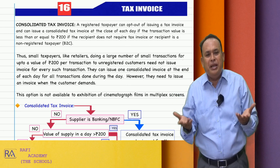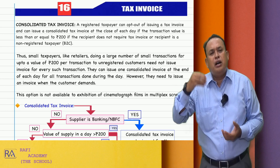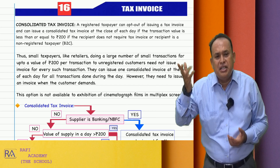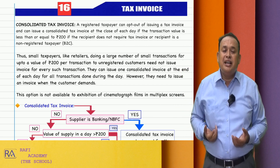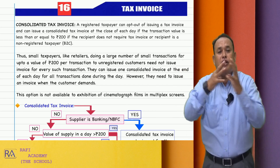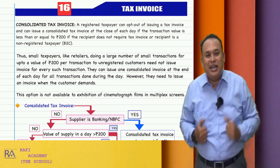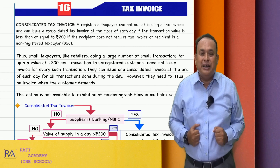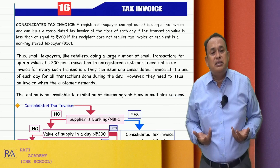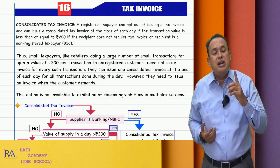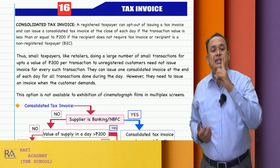Whatever the per-day transactions — let us say 250 transactions — each transaction not exceeding rupees 200. In that case, the total value for the day comes to, say, rupees 10,000. On that 10,000, I have to pay GST by preparing one consolidated tax invoice, day-wise.